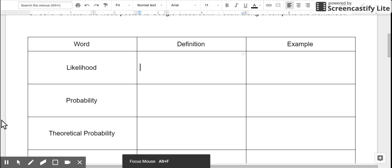We'll start by defining the words in this table. The first word you see is likelihood. If I'm talking about the likelihood of something occurring, I'm describing the chance that an event occurs.